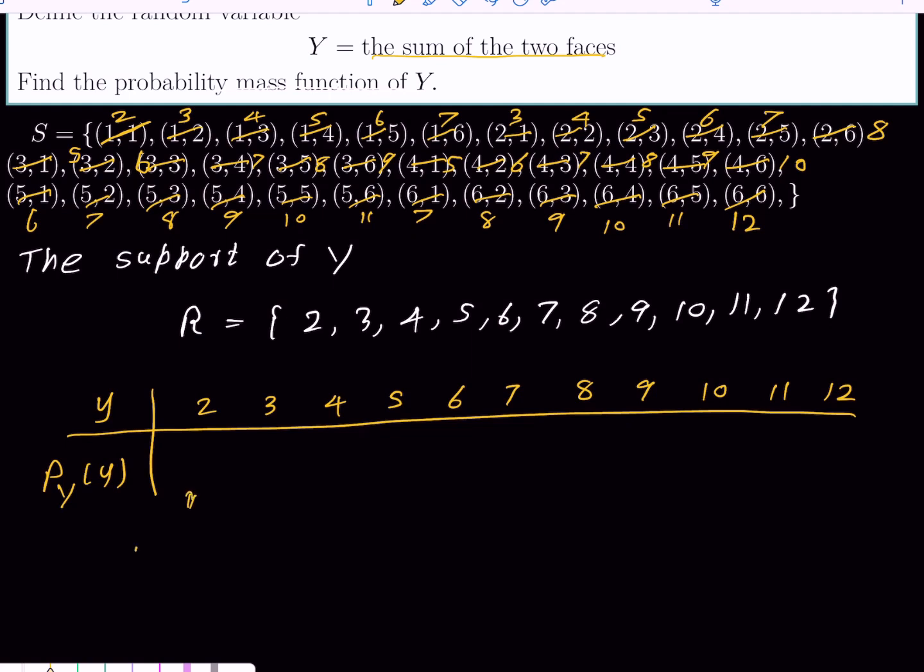How do we find the probability of Y? We get the probability of Y equals 2. How many 2s do we have? We have only 1 out of the total sample space size of 36. Therefore, 1 over 36. Then, how many 3s do we have? We have one 3 here and another here, so 2 over 36. Similarly, you can fill the table: 3 over 36, 4 over 36, and so on.